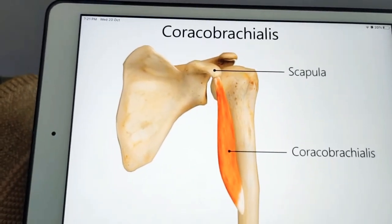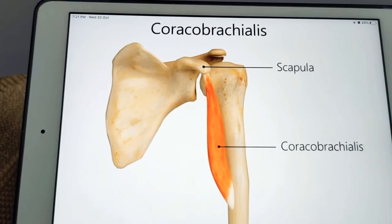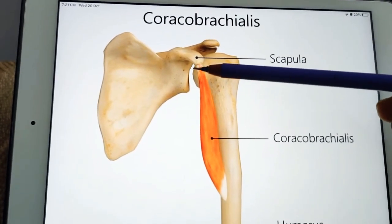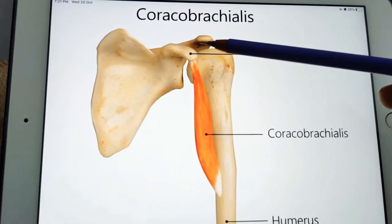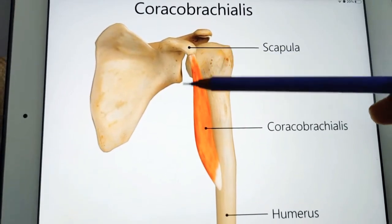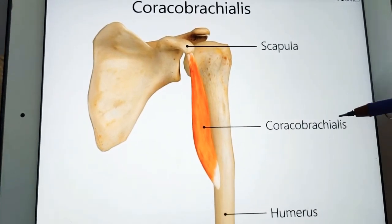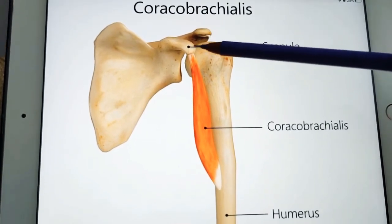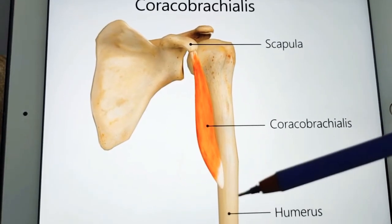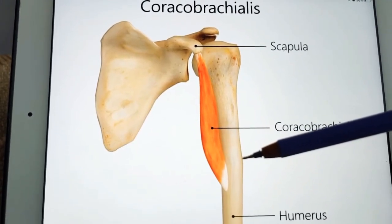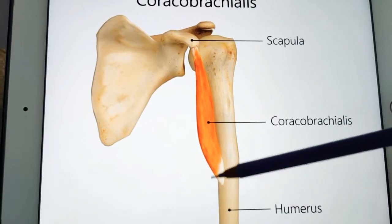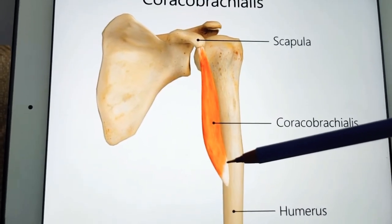Let us start with the muscles of the anterior compartment. The first muscle is coracobrachialis, which gets its origin from the tip of the coracoid process — the same origin as the short head of biceps brachii. In the name itself, 'coraco' comes from the coracoid process, and 'brachialis' refers to the arm (humerus). It is inserted at the middle five centimeters of the medial border of the humerus.